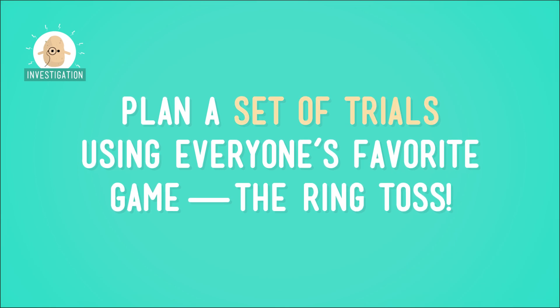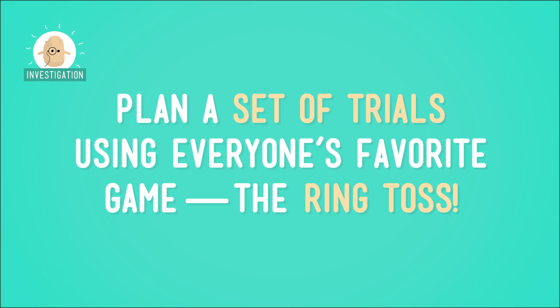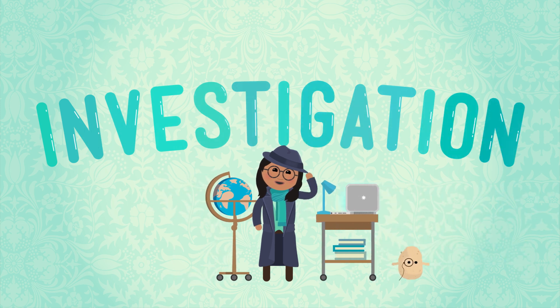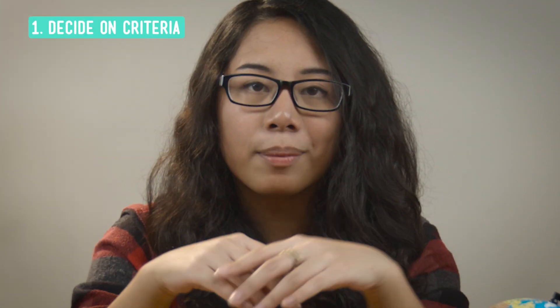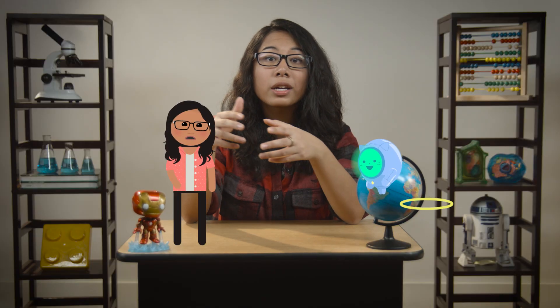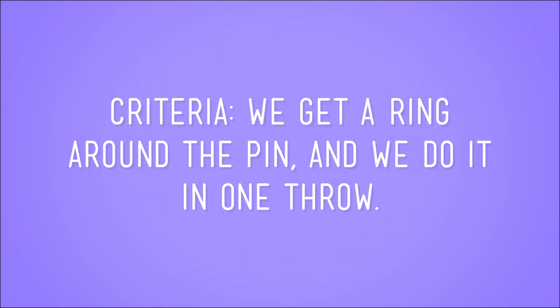So now, let's put the whole bunch of steps together to plan a set of trials using everyone's favorite carnival game — the ring toss. First, we'll come up with criteria for a successful outcome. If you've ever done a ring toss, you know that you get a couple of tries to get a ring around the pin. I say go big or go home, so let's aim to do it in one. Those are our criteria: get a ring around the pin and do it in one throw.